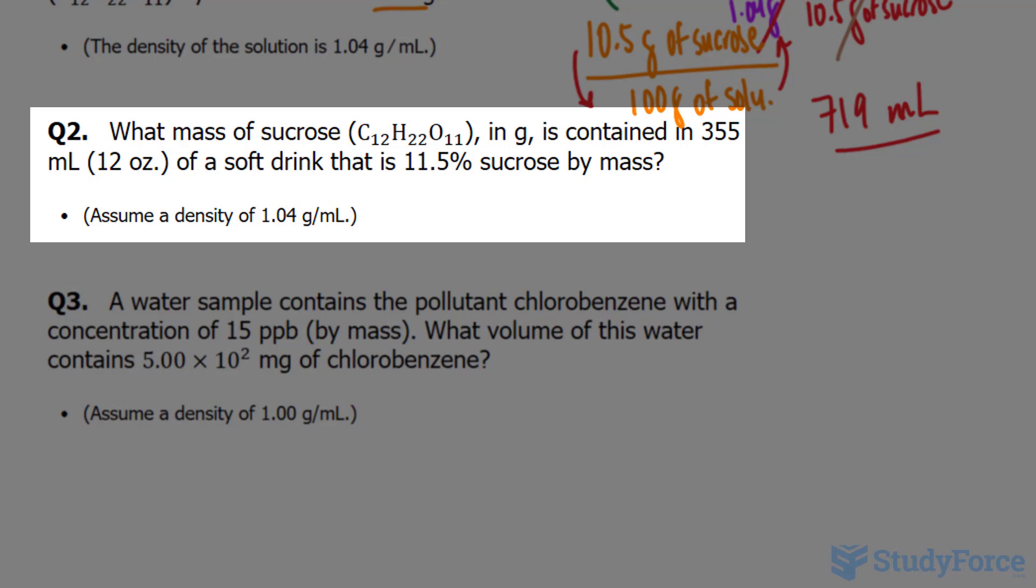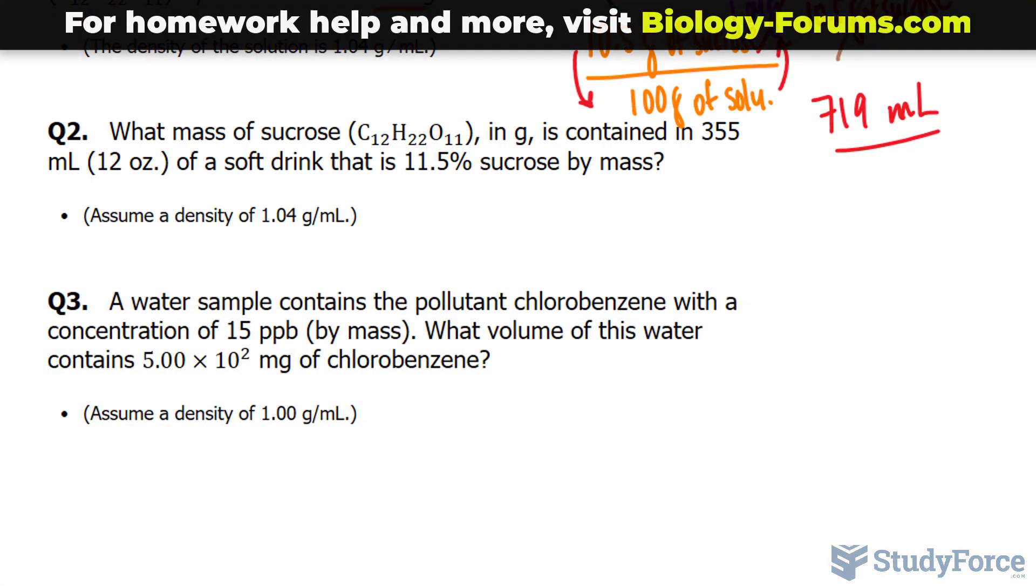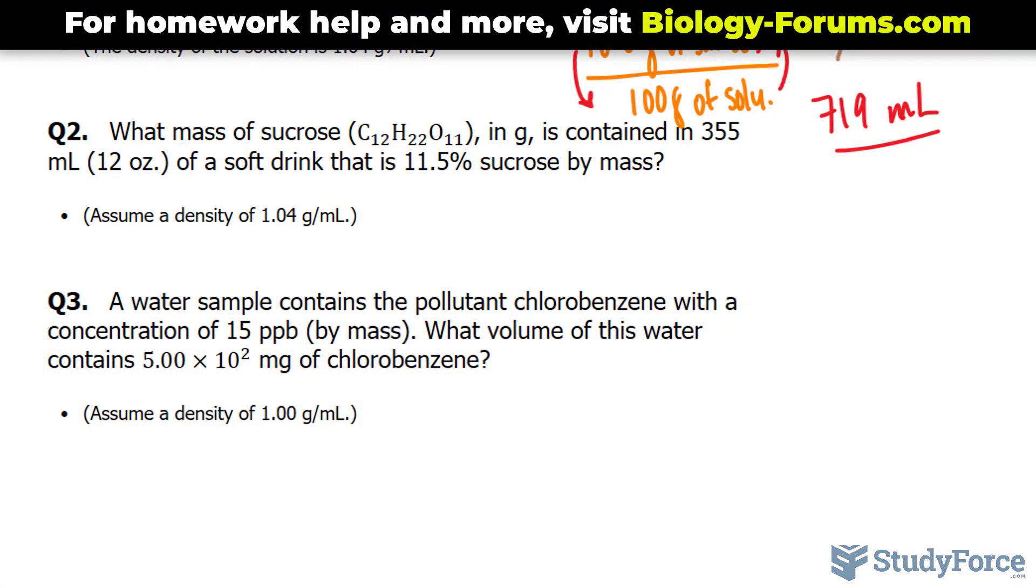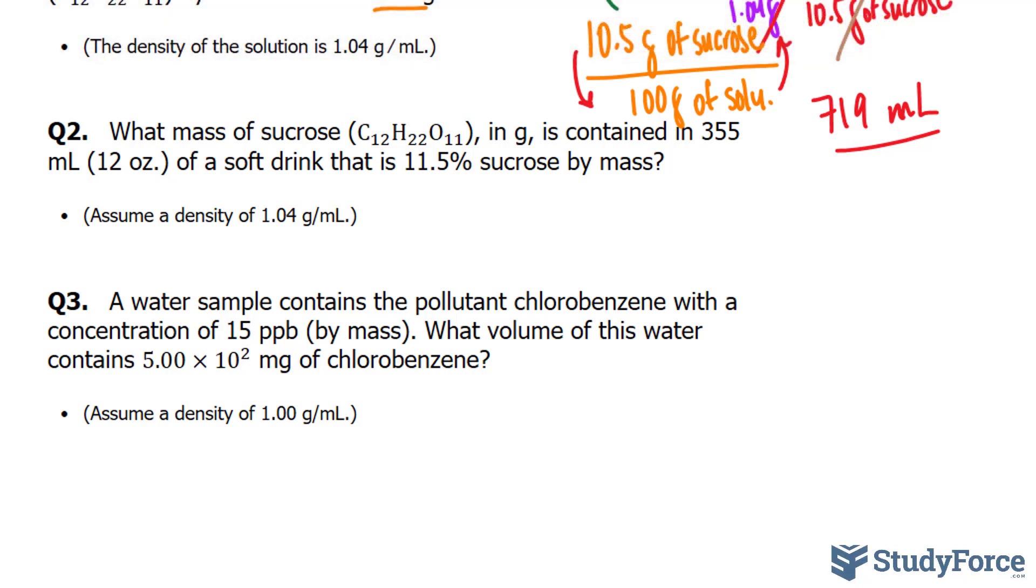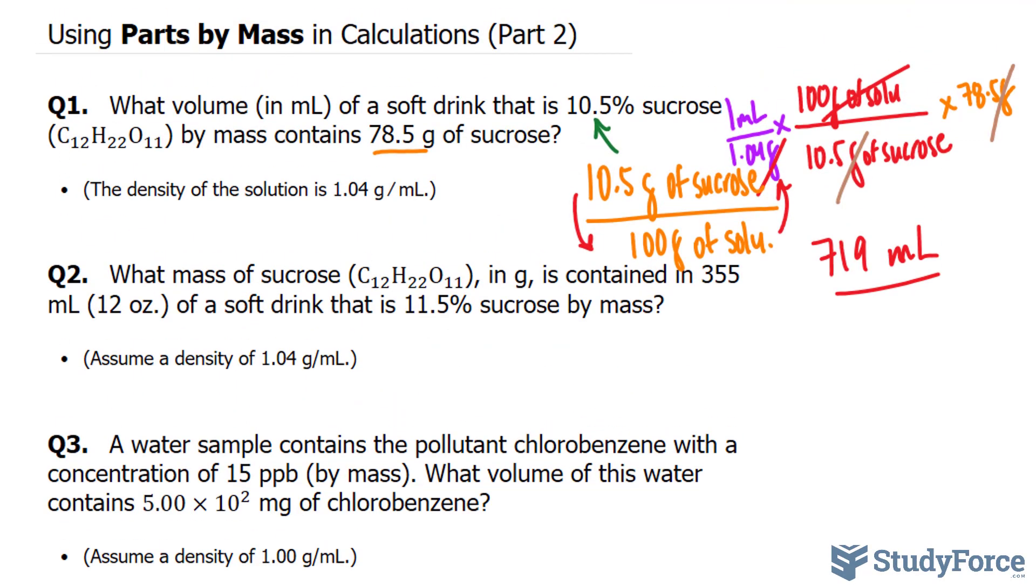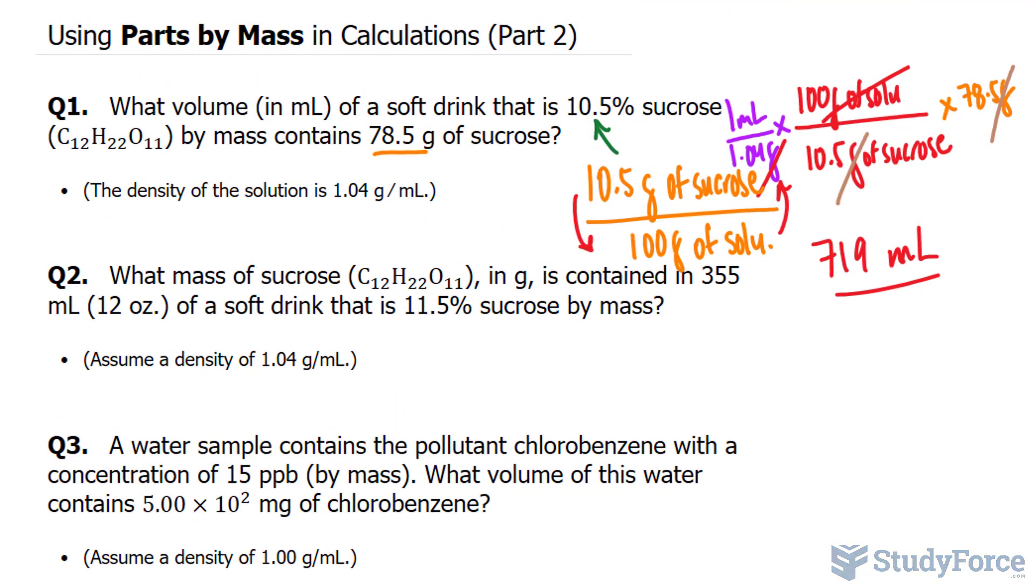What mass of sucrose in grams is contained in 355 milliliters, equivalent to 12 ounces, of a soft drink that is 11.5% sucrose by mass? We have to assume that the density is 1.04 grams per milliliter. This question is very similar to question one except that in question one they wanted the volume whereas here they want the mass.